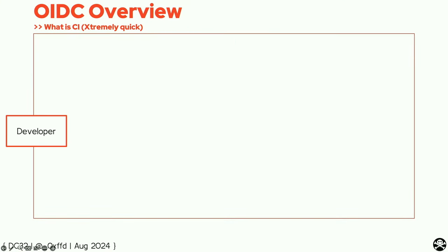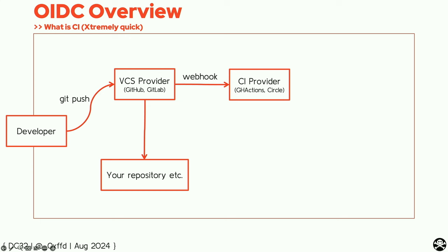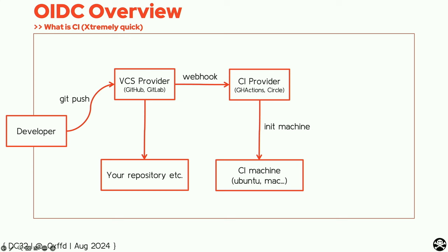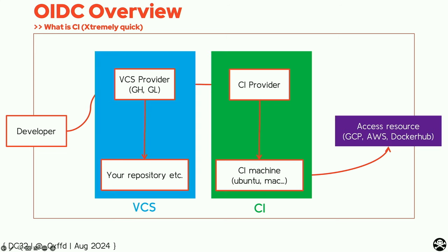Extremely quickly — what is CI? Assuming you're a developer, you performed some GitHub operation — maybe a push, pull request, et cetera — this was pushed to your VCS provider: GitHub, GitLab, you name it, and it was reflected in your online repository. Since you've configured your CI provider, the VCS provider notified your CI provider that something happened using a webhook with payload. In turn, the CI provider spun a machine for you — it can be any OS according to your configuration, aka workflow. These machines do whatever you want: lints, builds, compilations, and since we're in 2024, they also push to your cloud environments — GCP, AWS, Docker Hub, basically everything out there. This is CI.